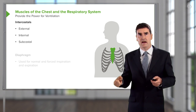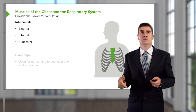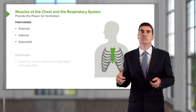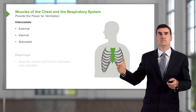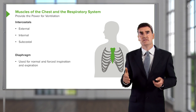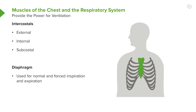The intercostals divide into three types: the external, which is on the outside; the internal, which is in between; and then the subcostal, which is the most inferior layer, closest to the parietal pleura. Finally, there is the diaphragm. The intercostals and the diaphragm are used for inspiration, and during forced expiration — such as when exercising — you will also recruit these muscles for that process.